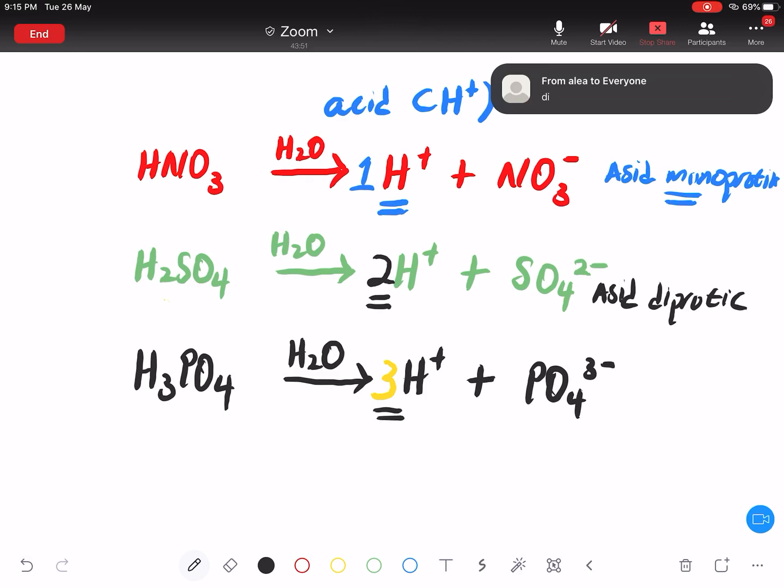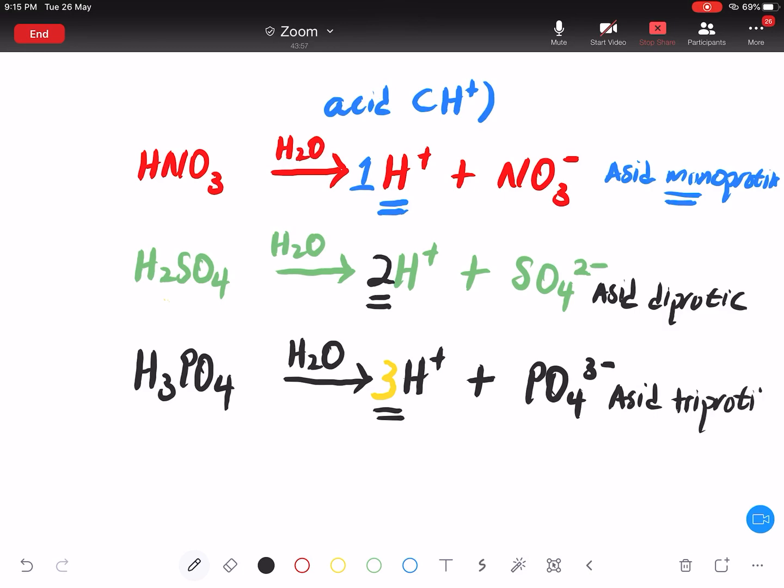Ini ada tiga. Maka, dia dipanggil Acid triprotic. Dalam BM, dia K. Dalam BI, dia jadi C. Monoprotic, diprotic, triprotic, acid. Itu je maksud acid.